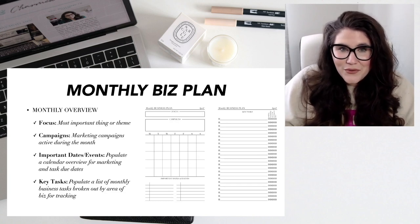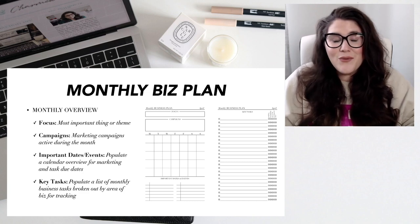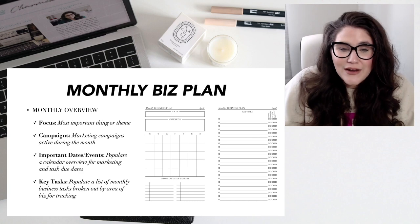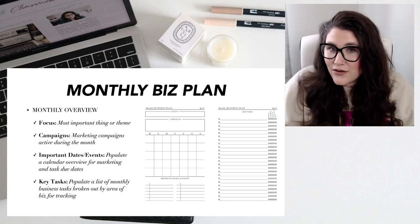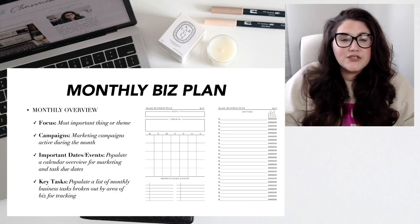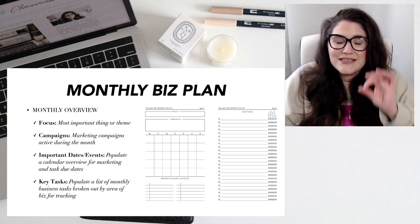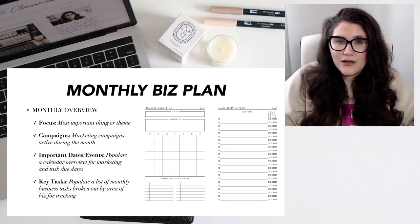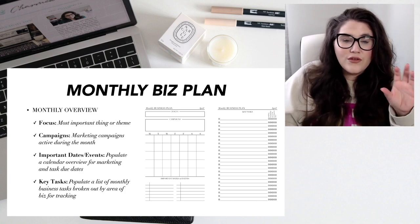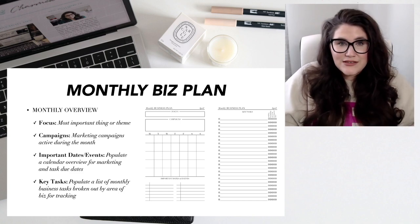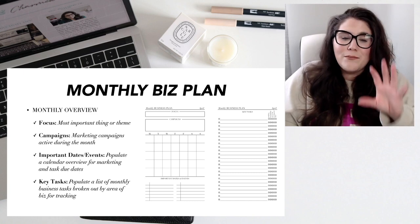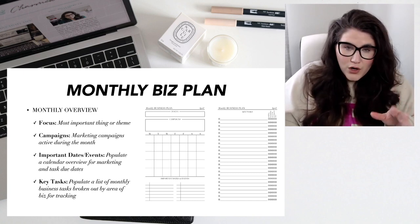Then your monthly overview. We've set out the quarters — now we set out the month. My monthly overview starts out with that focus, the most important thing or theme, which you already said when you created your quarterly plan — you're just writing it into your monthly plan as well. Then your campaigns: list out what marketing campaigns are active during the month. You also want to fill out your calendar for the month with your marketing overview, due dates, days you're going live on Instagram or YouTube, or when content goes out.